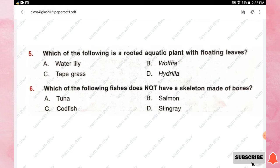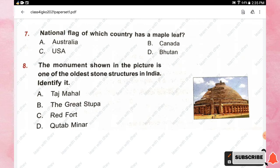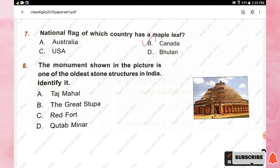Question number seven: the national flag of which country has a maple leaf? Options are Australia, Canada, USA, and Bhutan. The right answer is option B, Canada.